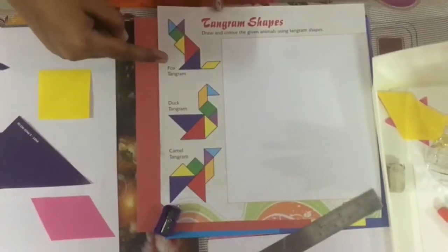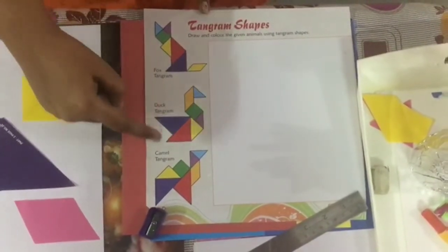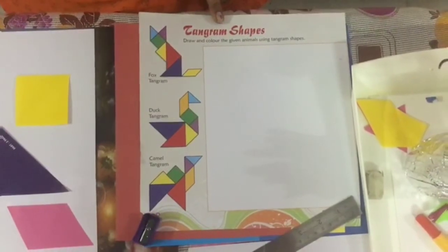With this activity, you can create different types of things like a fox, a duck, a camel, and so on. You can explore many of them.